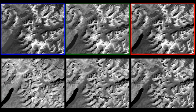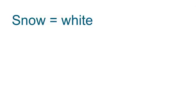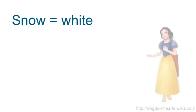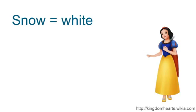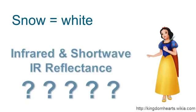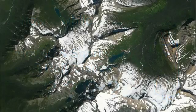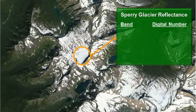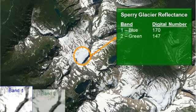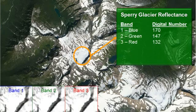Let's investigate one phenomenon we're all familiar with — snow. Snow is white because it greatly reflects light within the visible portion of the spectrum. Let's take a closer look at a glacier in the park — Sperry Glacier. As you might predict, the visible bands (bands 1, 2, and 3) reflect light very strongly, with digital numbers ranging from 132 to 170. Fairly reflective.